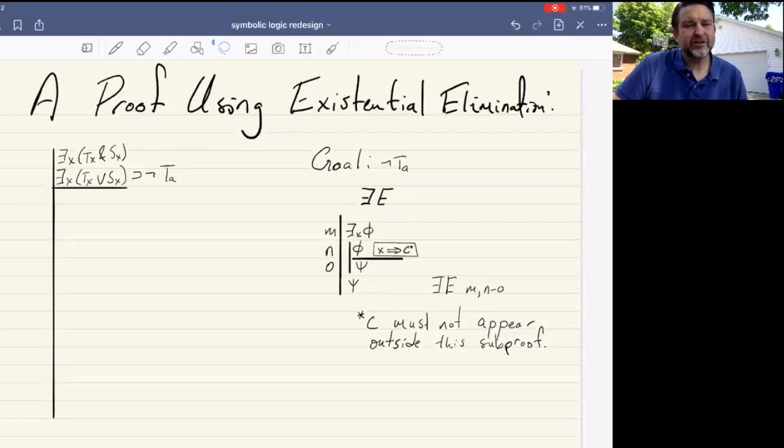Existential elimination is a rule in which we attribute some name to an object that we know exists because we have an existential statement saying there is some object that has a certain property.